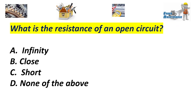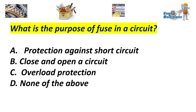What is the resistance of an open circuit? A. Infinity. B. Close. C. Short. D. None of the above. Answer: A. Infinity. What is the purpose of a fuse in a circuit? A. Protection against short circuit. B. Close and open the circuit. C. Overvoltage protection. D. None of the above. Answer: A. Protection against short circuit.